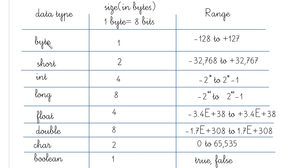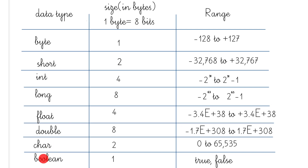Starting with the first data type, please maintain this order: byte, short, int, long, float, double, char, boolean. You should learn them in this order because it will be easier to remember the size of each. The first four are all integer primitive data types; then come the floating point types float and double, then char, then boolean.